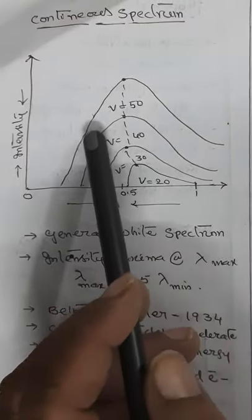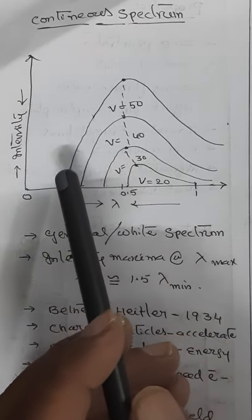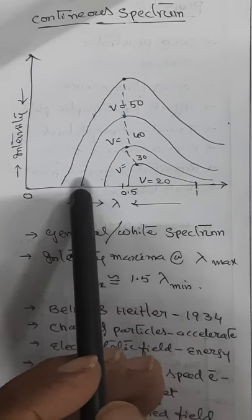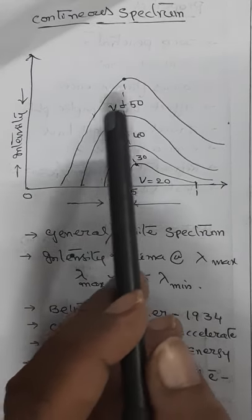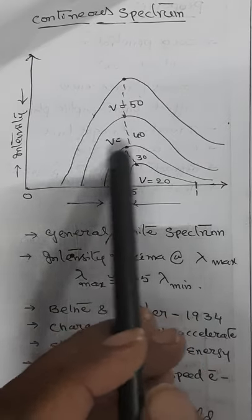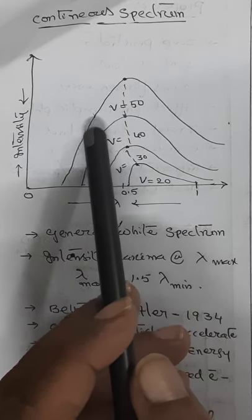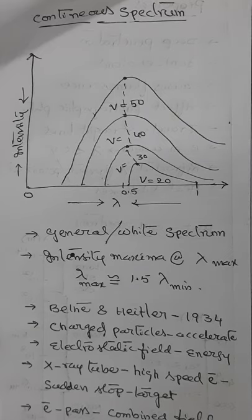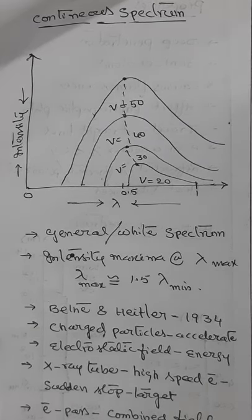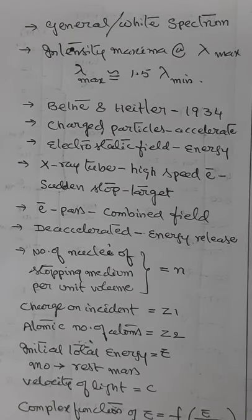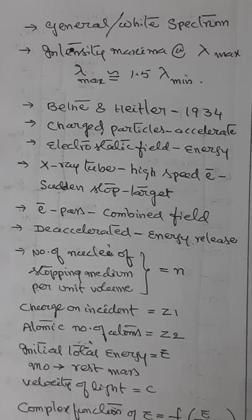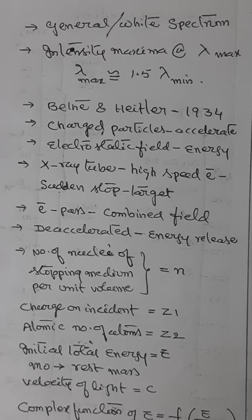A typical continuous spectrum shows wavelength on the X-axis and intensity on the Y-axis. These are potential curves of the continuous spectrum. By varying the X-ray tube accelerating potential, lambda minimum shifts towards the left, meaning X-rays attain more energy. The intensity of X-rays also increases with voltage. The continuous X-ray spectrum has an intensity maximum at lambda maximum, which is approximately 1.5 times lambda minimum. In 1934, two scientists — Bethe and Heitler — established that when charged particles accelerate or decelerate in a strong electrostatic field, they release their energy in the form of radiation.